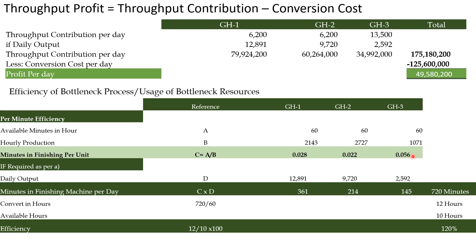To produce the required units: GH1 = 12,891 × 0.028 = 361 minutes; GH2 = 9,720 × 0.022 = 214 minutes; GH5 = 2,592 × 0.056 = 145 minutes. Total = 720 minutes. Converting to hours: 720 ÷ 60 = 12 hours required. Available hours = 10 hours. Therefore, efficiency = 12 ÷ 10 × 100 = 120%.